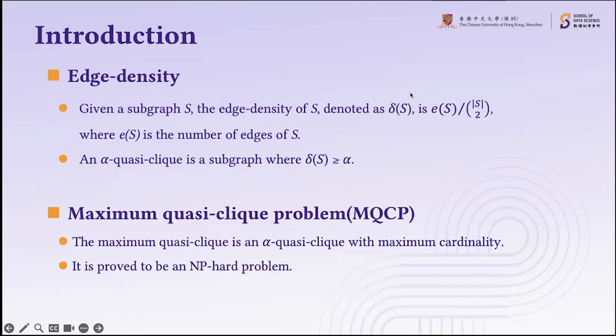Given a subgraph S, the edge density of S, denoted as delta(S), is the number of edges of S divided by the binomial coefficient C(|S|, 2), where an alpha quasi-clique is a subgraph where delta(S) is larger than alpha. The maximum quasi-clique is an alpha quasi-clique with maximum cardinality, and it is proved to be NP-hard. Finding the exact solution of the maximum quasi-clique problem is very time-consuming, so in this work we propose polynomial time algorithms that find near-maximal quasi-cliques efficiently.